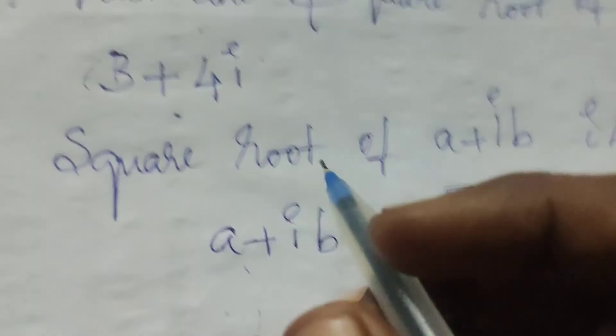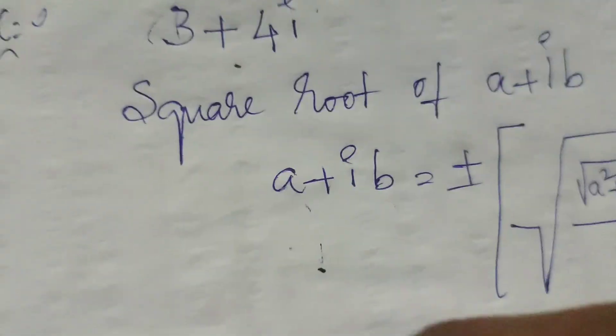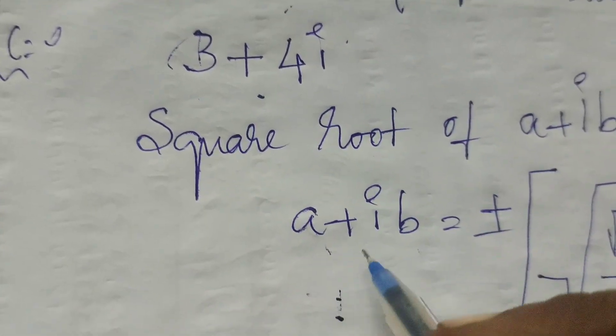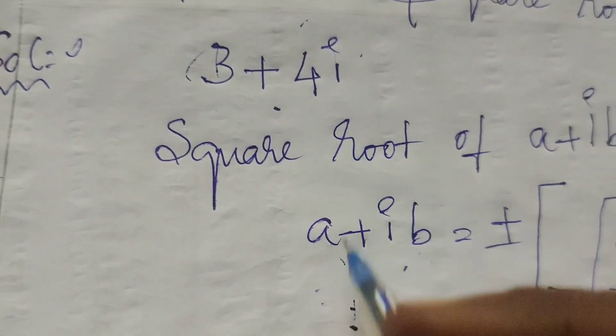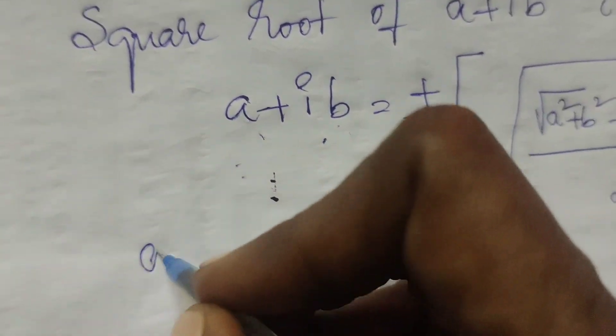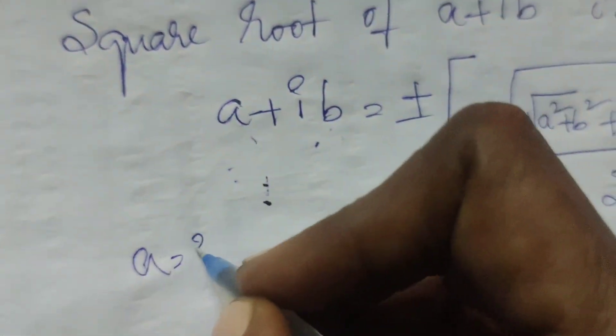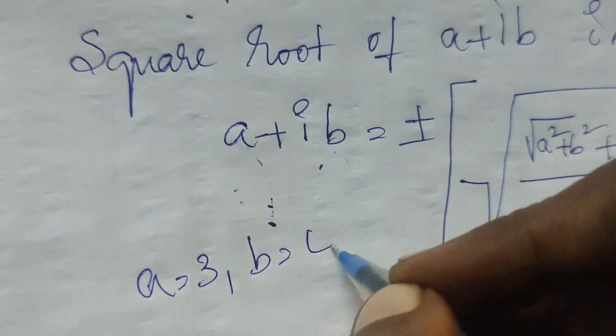Using this formula, the given expression is 3 plus 4i. Comparing with a plus ib, we get a equals 3 and b equals 4.